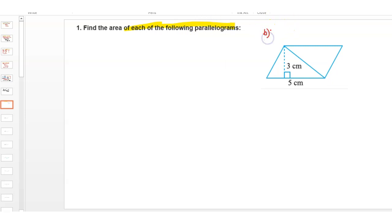This is part B. The first part we completed in the last video. So this is a parallelogram and we need to find the area of this shape.